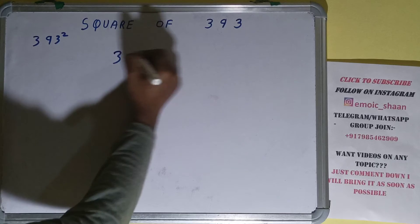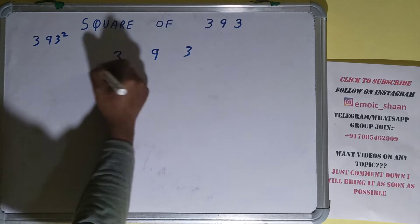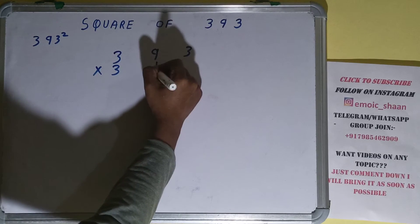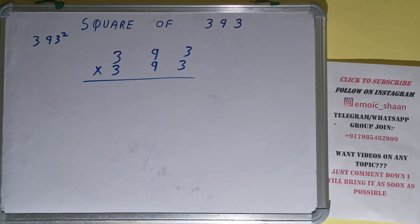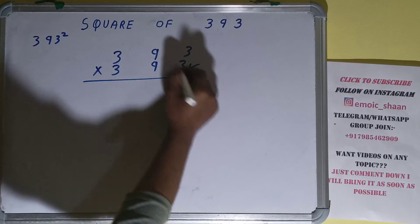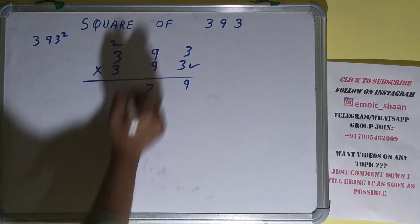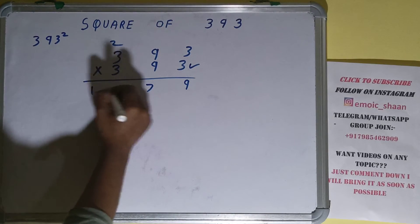Let's start with this 3. 3 times 3 is 9. 3 times 9 is 27, 2 carry. 3 times 9 is 27 plus 2 is 29, so we get 11.